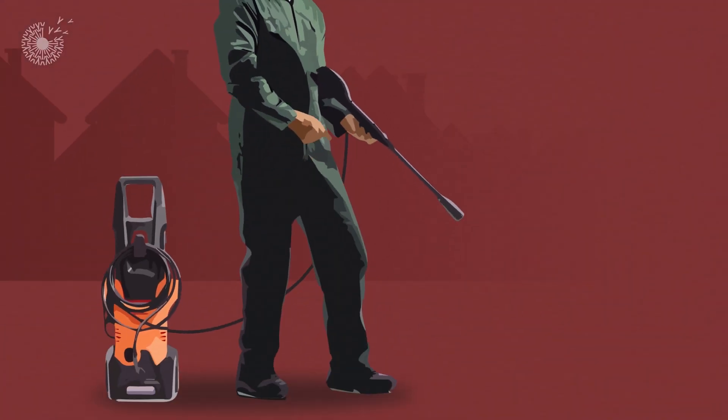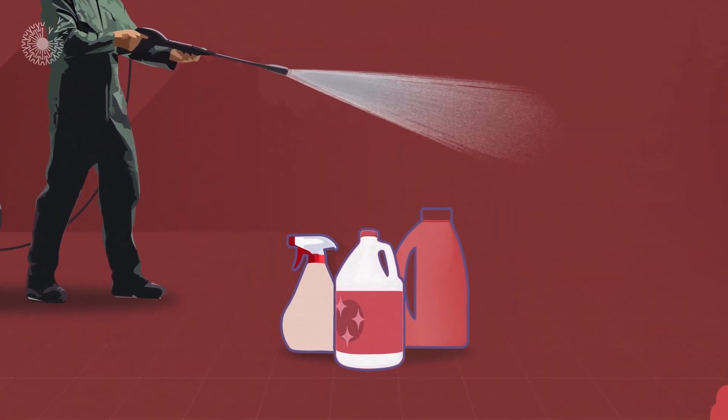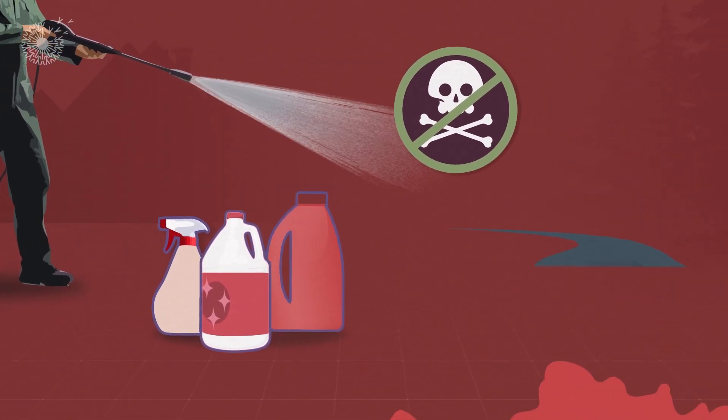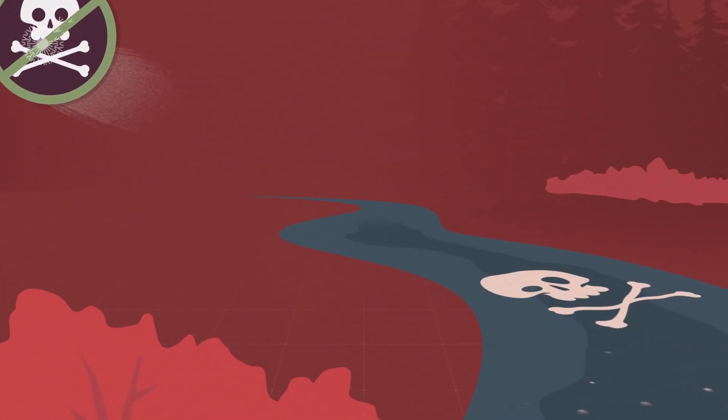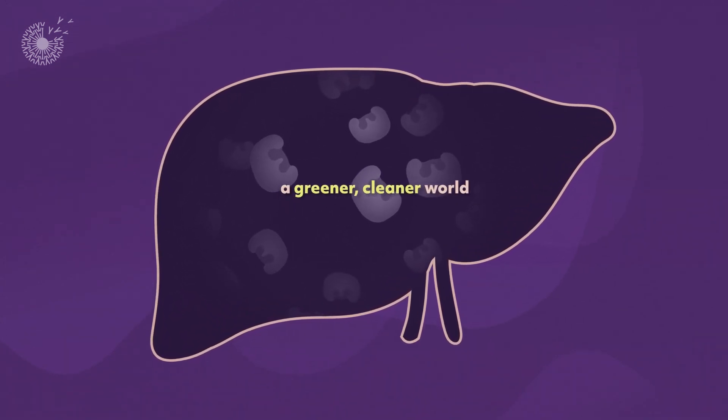And they do this with enzymes. When we clean the world outside our bodies, we tend to use harsh chemicals that create toxic conditions downstream. But now we're learning from our livers' oxidative enzymes how to make a greener, cleaner world.